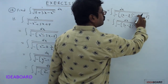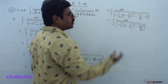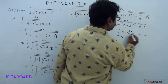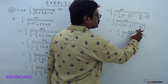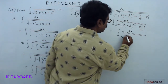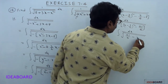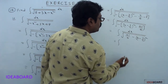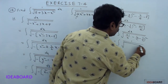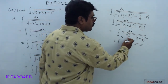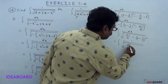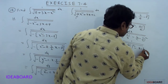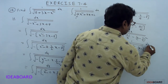So this equals integral dx divided by square root of minus times [(x minus 3/2)² minus 41/4]. Multiplying the negative sign through: this becomes integral dx divided by square root of 41/4 minus (x minus 3/2)². And 41/4 can be written as (√41/2)².